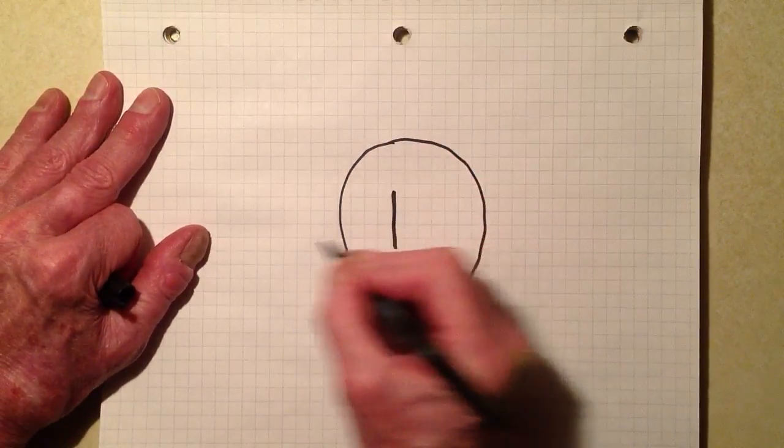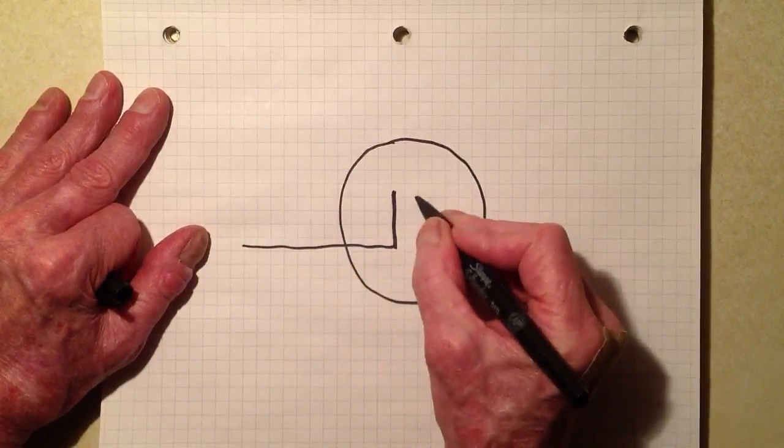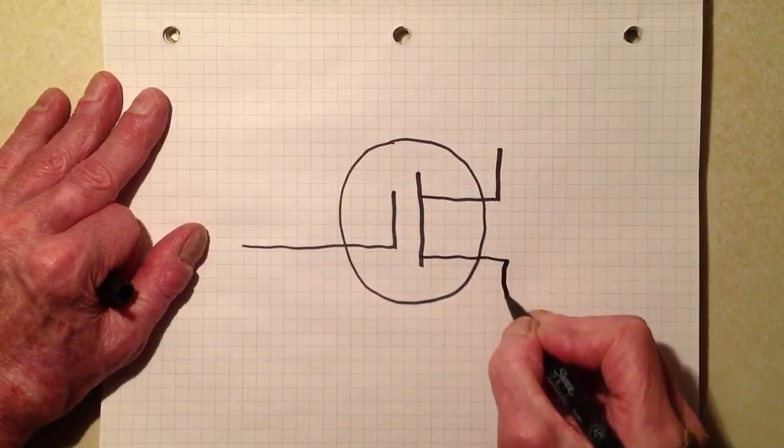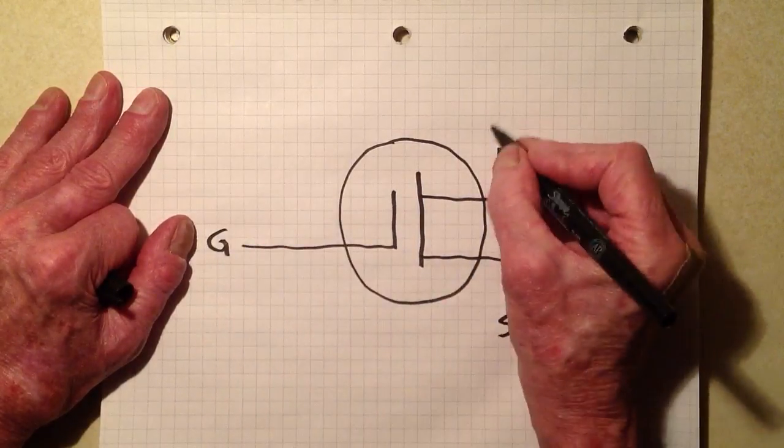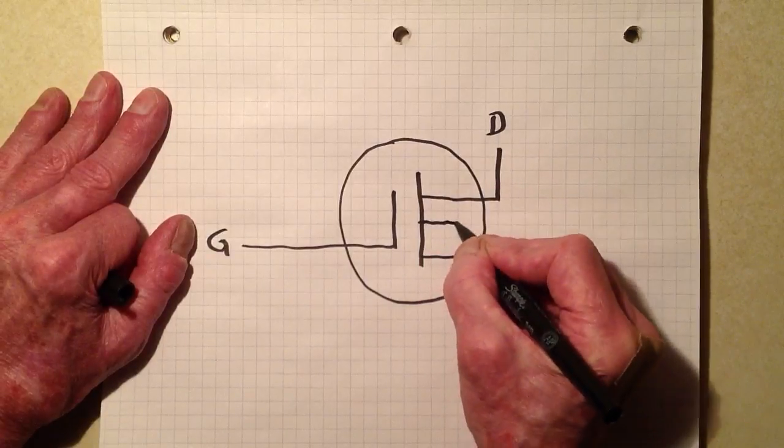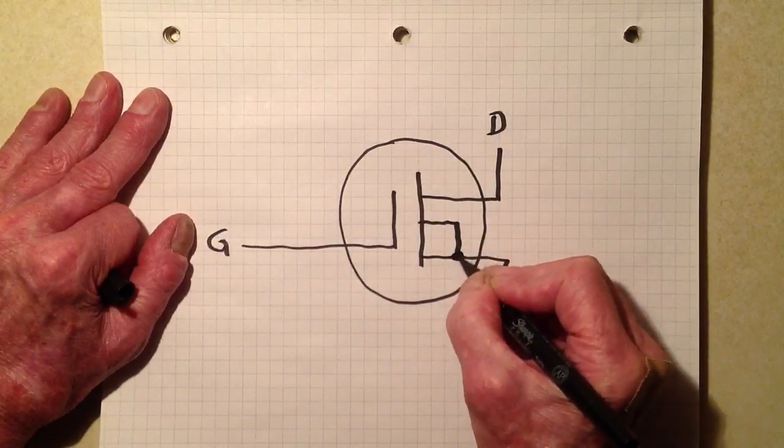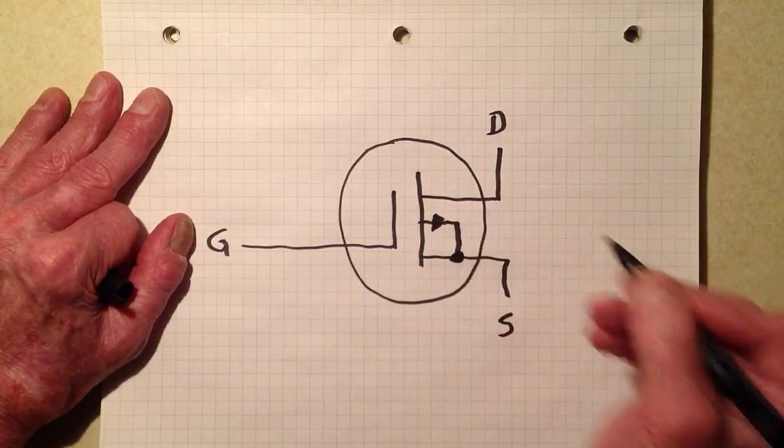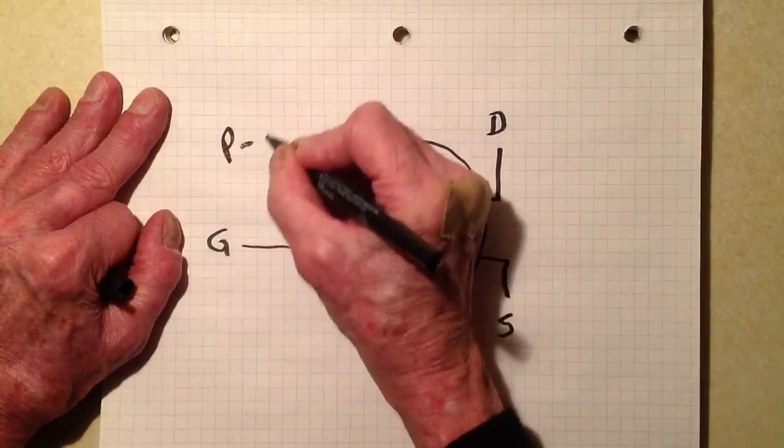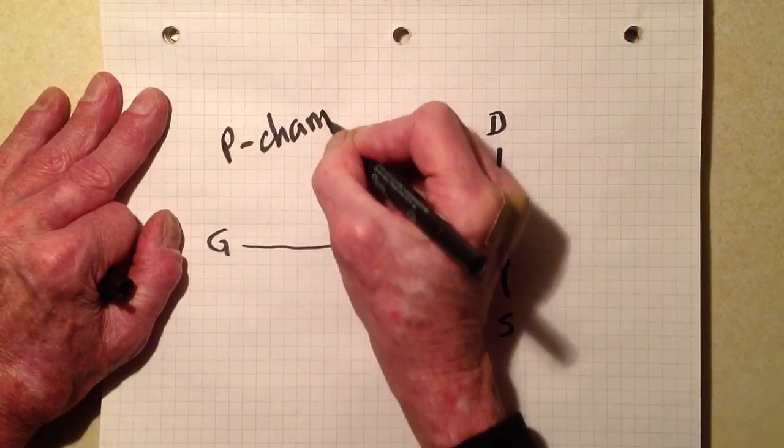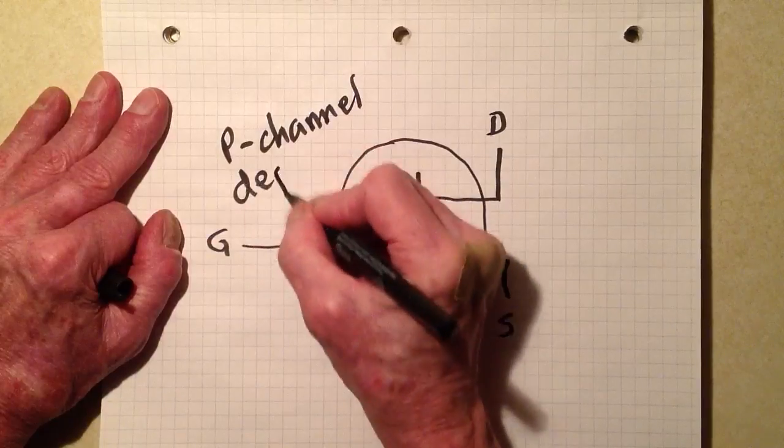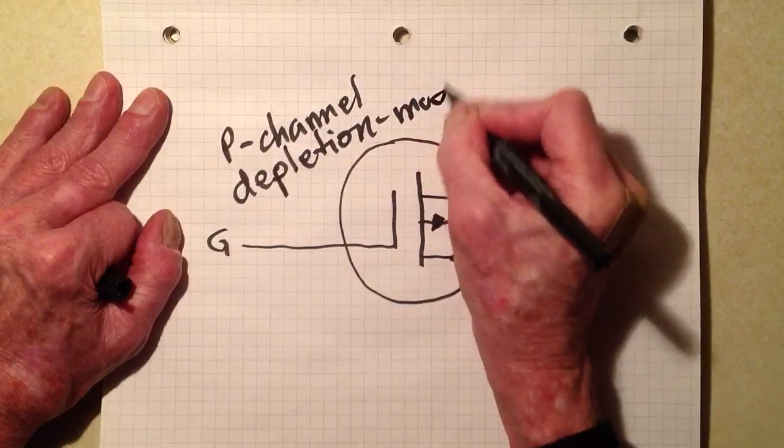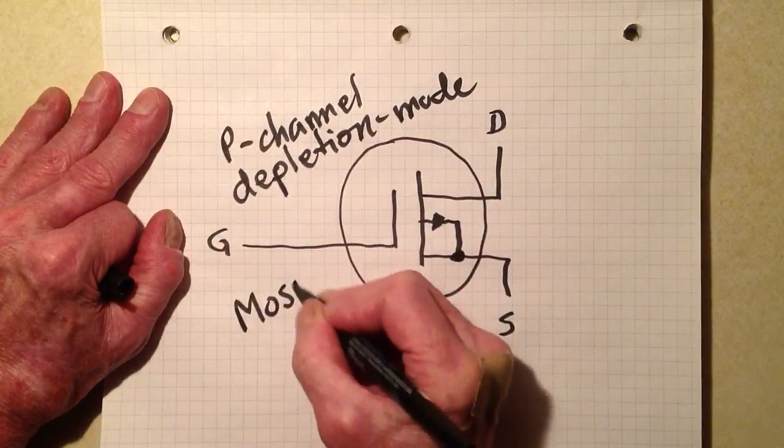How do we indicate a P-channel device, do you suppose? Source, gate, drain, there's the little half square thingy, an arrow pointing out. That is a P-channel depletion mode MOSFET.